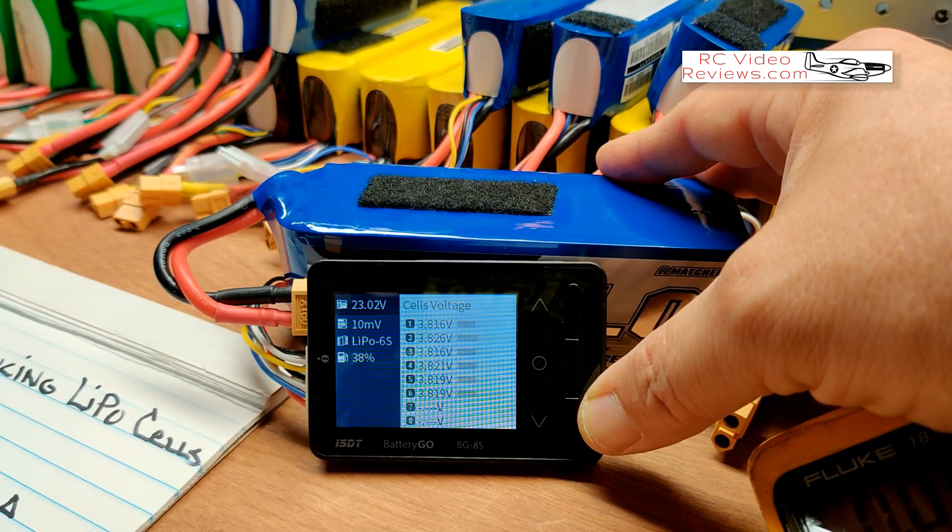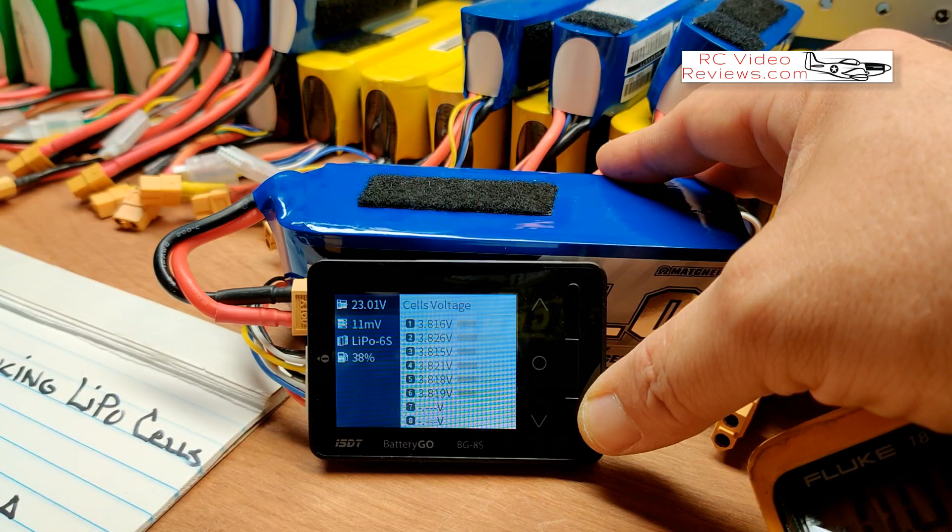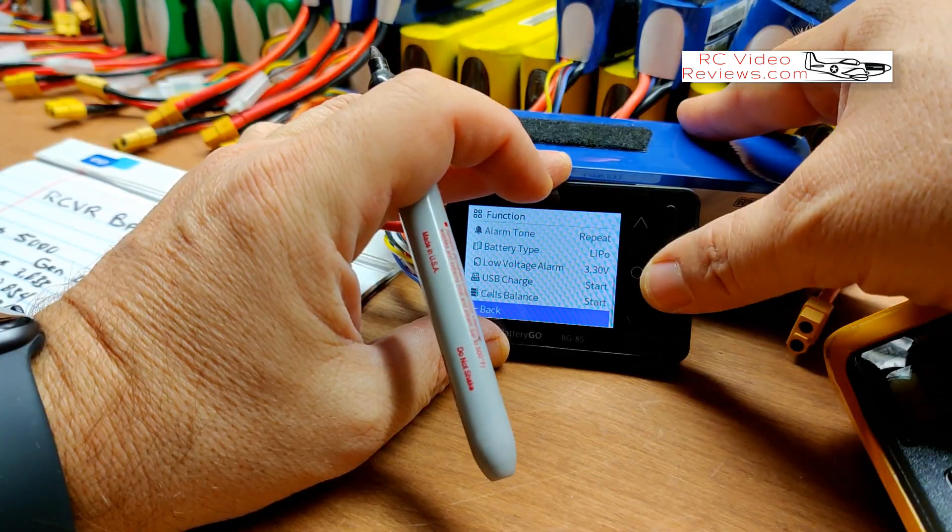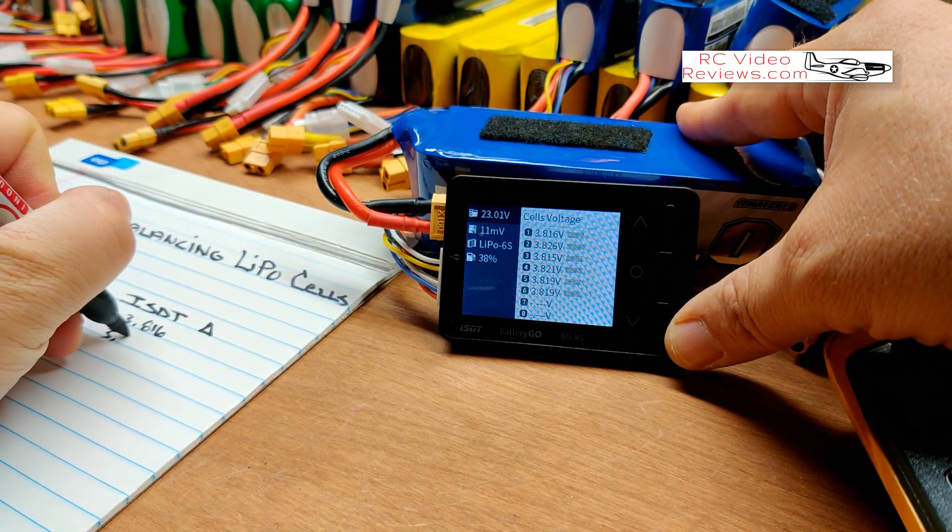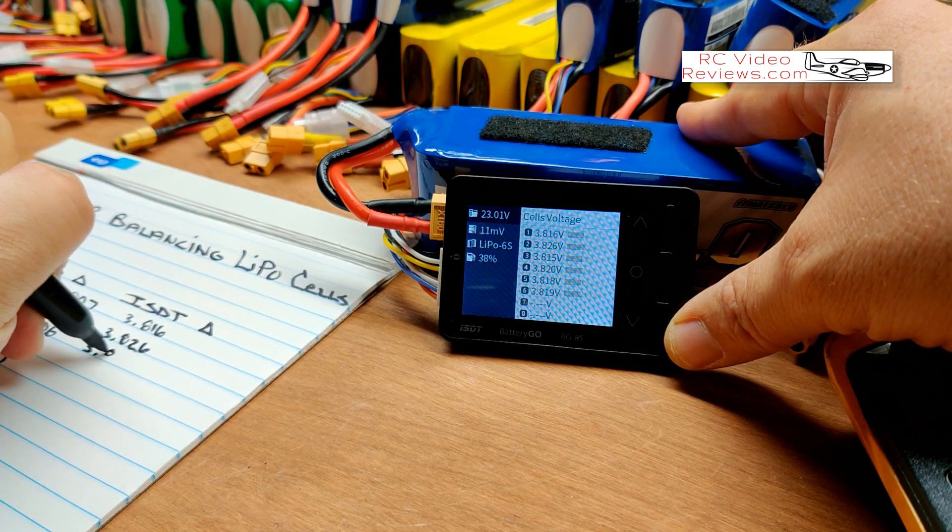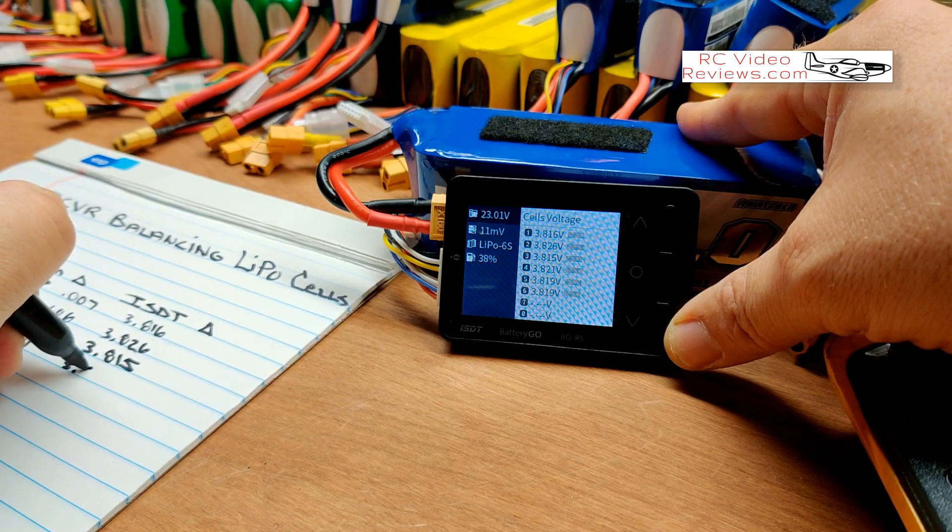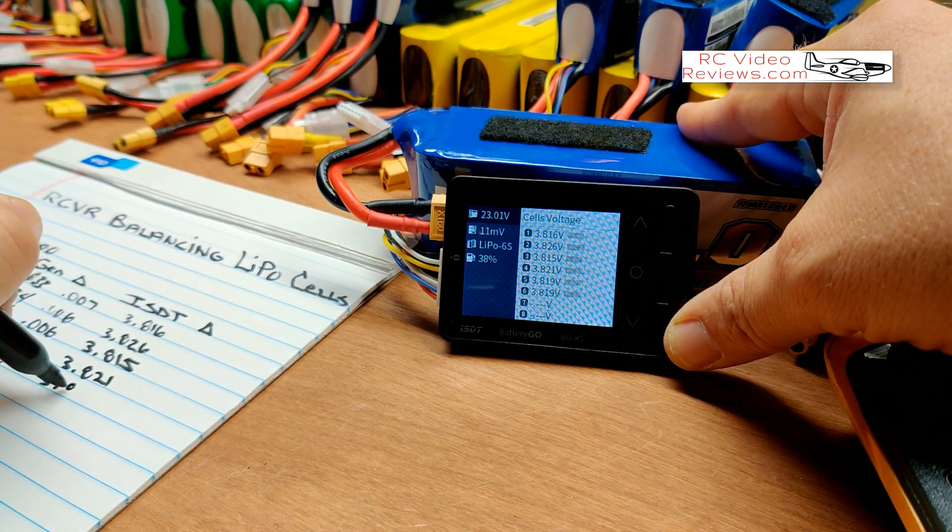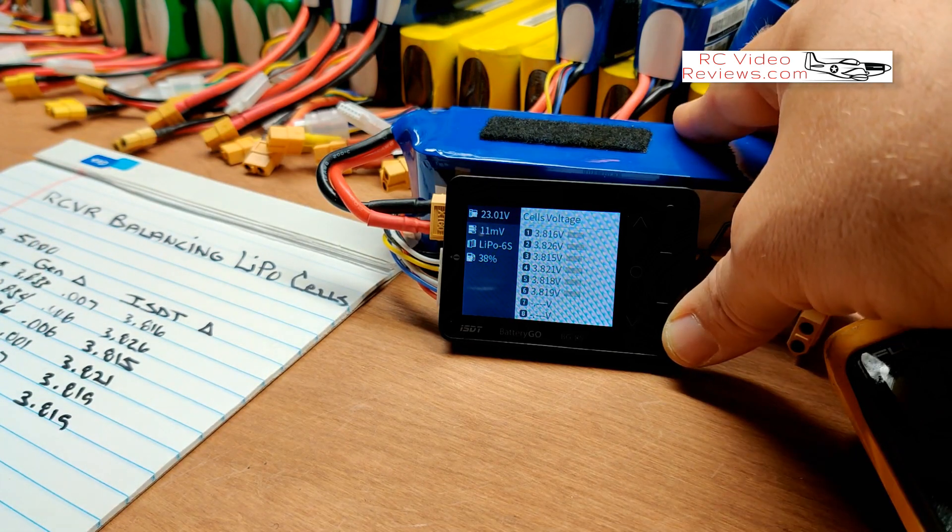Let's get the per cell voltage documented on this ISDT. So cell one, we're looking at 3.816. And cell two, 3.826. Cell three is 3.815. Cell four is 3.821. Five is 3.819. And six is 3.819.